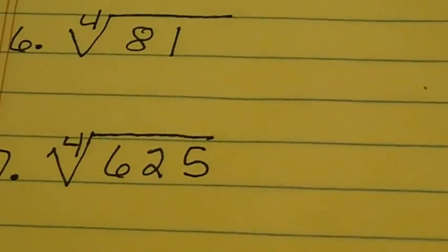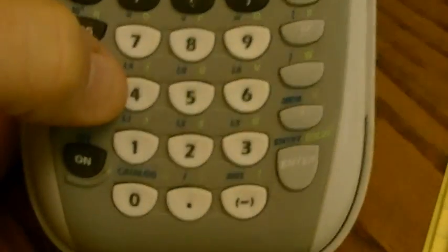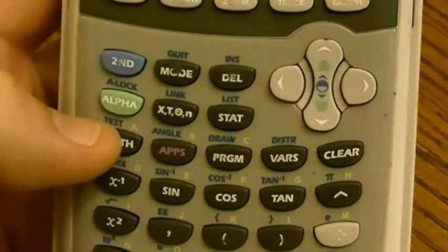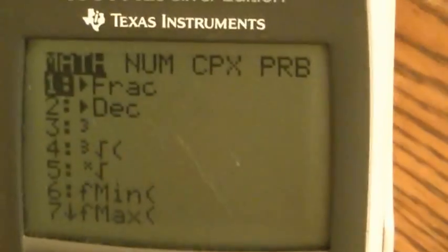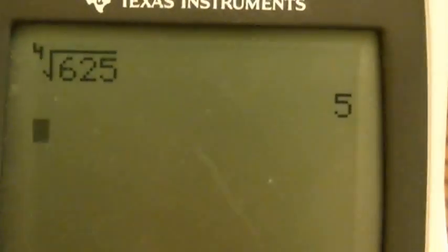Let's do another high-order root. Number 7 is the fourth root of 625. Since my root is higher than 3, I've got to tell it what root I'm going to take. So I hit 4 first, then the MATH button. I hit number 5 — the one with the x in front of the radical — and once again I've got a 4 in front of my radical. I punch in 625, hit enter, and the fourth root of 625 is 5.